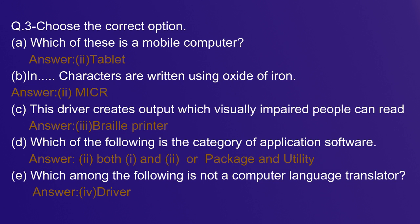C: This device creates output which visually impaired people can read. Braille printer.